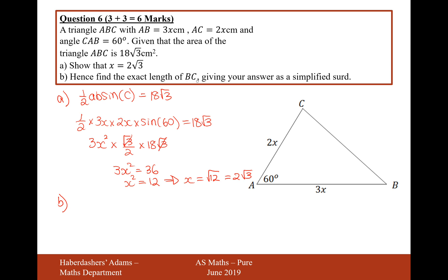Hence, find the exact length of BC, giving your answer as a simplified surd. Well, that's going to be the cosine rule. So it's going to be a squared equals b squared plus c squared minus 2bc cos a.